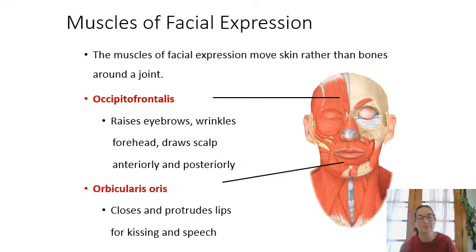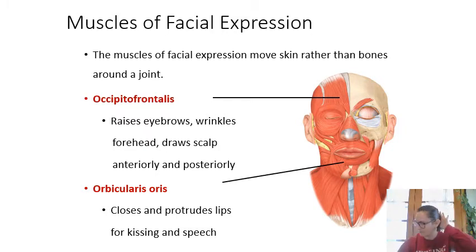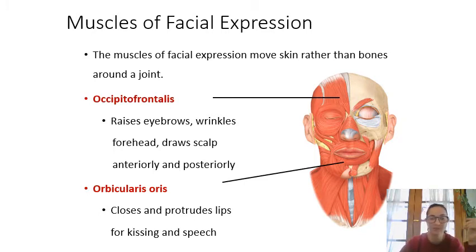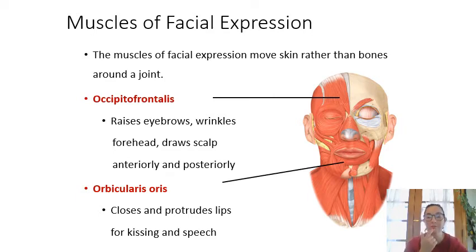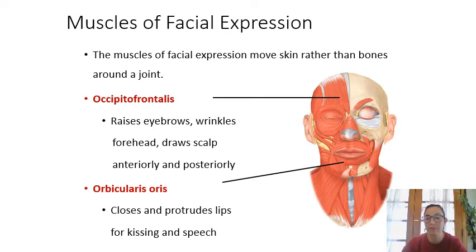Now let's go through the actual muscles, starting at the head and moving down. First is the occipitofrontalis: the frontalis is in front, the occipitalis is at the back of the head, and they connect through the epicranial aponeurosis. Its job is basically to raise your eyebrows. Next is orbicularis oris — orbicularis means something that goes around, and oris relates to the mouth. It moves your lips for speech and kissing.